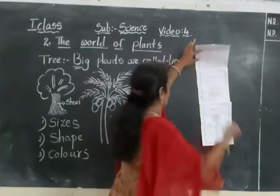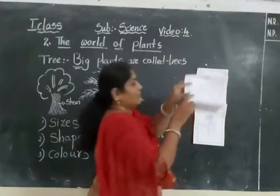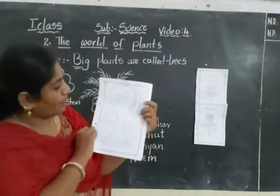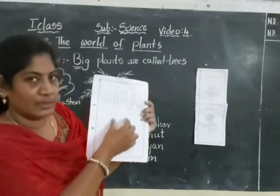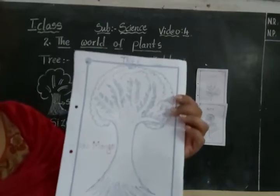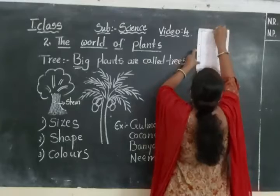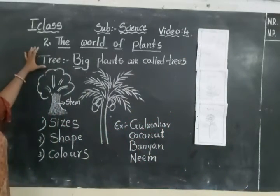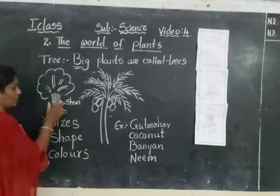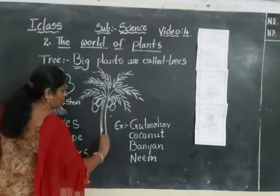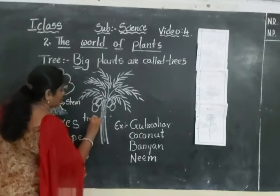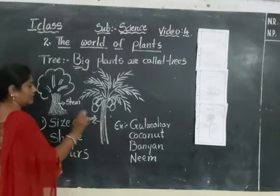This is the example of a mango tree. These are the roots of the plant. The stem is very hard and thick, and it is very bushy in the upper part. This is called trunk also. T-R-U-N-K. Trunk. S-T-E-M. Stem. They are different in sizes, shape, and colors.